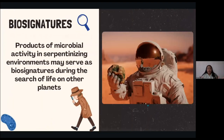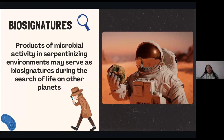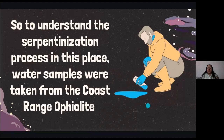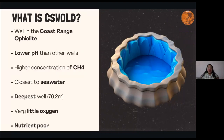Another important application of this process is to look for biosignatures, because the products of microbial activity in a serpentinizing environment might serve as biosignatures during the search for life on other planets. To understand the serpentinization process in this place, water samples were taken from the Coast Ranch ophiolite — specifically from a well called CSW. There are 11 other wells, but this was the one we worked from during the summer.